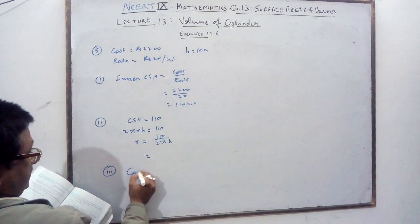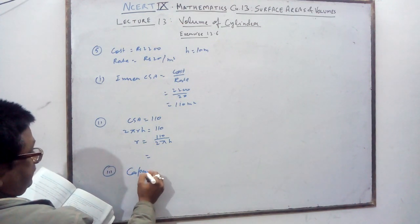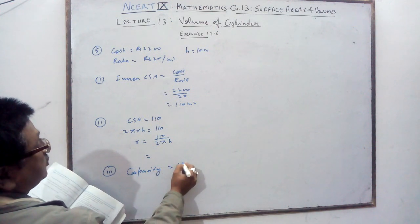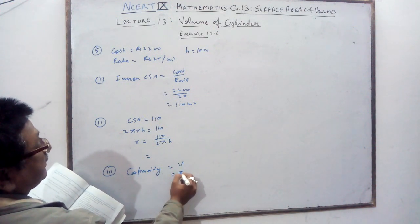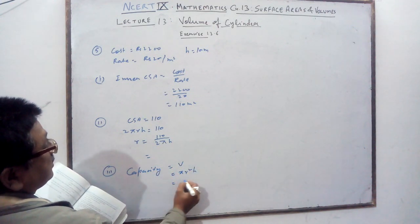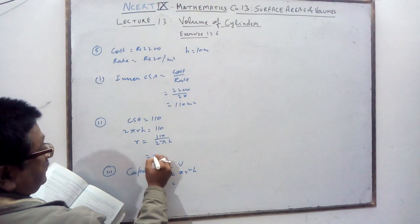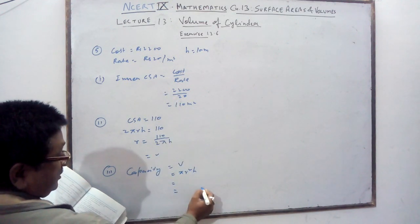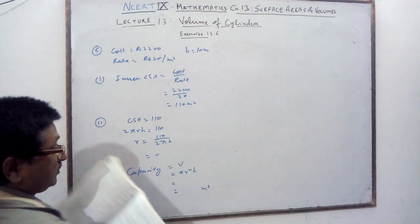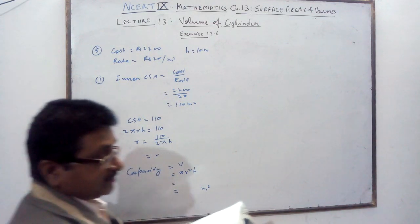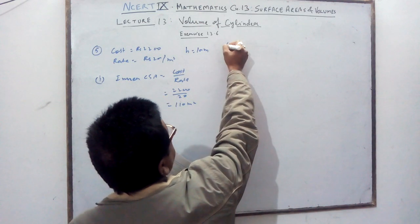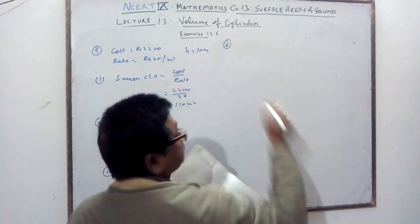The third part asks for the capacity, which means volume. Volume = πr²h. r is obtained from the previous part, h is given, and you will get your answer in meter cube — that is the capacity of the vessel.